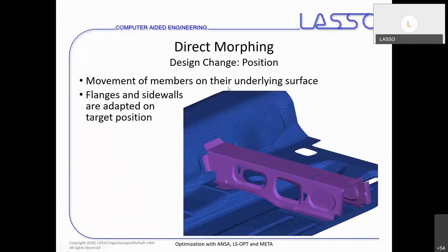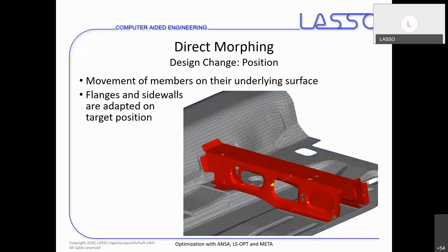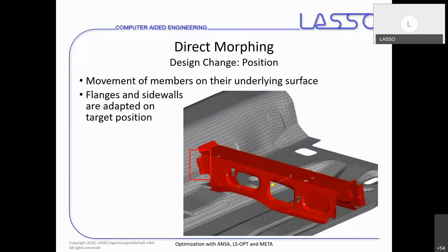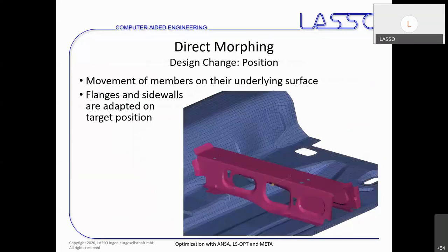Another example of design change procedures is changing the position of a part. We can move one part along another one and adapt all the flanges and all the areas where these parts are in contact. The red one is moved and you can see the flanges adapt to the target location, with the underlying part also updating.